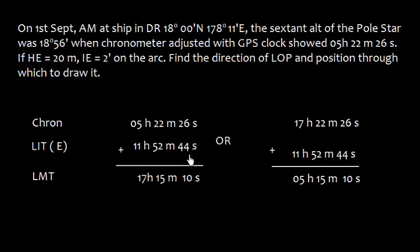So I have this time, and since the longitude is east, we can say GMT is least. That means LMT has to be more. So in order to get more LMT, I need to add this LIT.